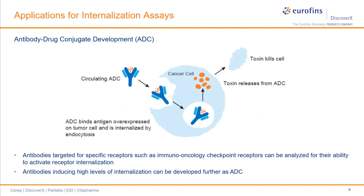Another application for the receptor internalization assays is for the development of antibody-drug conjugates, or ADCs. Antibodies for receptors targeted to specific cells are conjugated to cytotoxins, which are internalized and release the cytotoxin to kill the cell. ADCs are being developed as cancer treatments to specifically target and kill tumor cells. PathHunter internalization assays can be used to characterize antibodies targeted for receptors, such as immuno-oncology checkpoint receptors, for their ability to activate receptor internalization. Antibodies identified as inducing high levels of internalization may serve as lead candidates for conjugation to cytotoxic compounds.